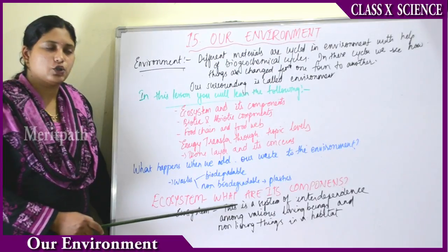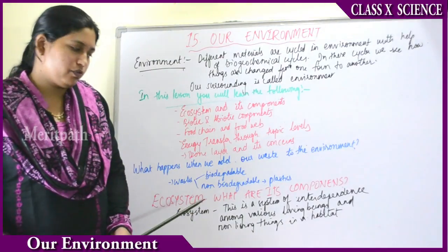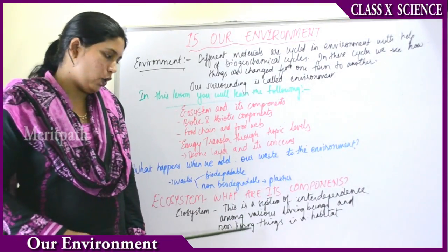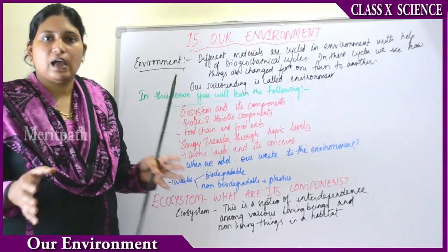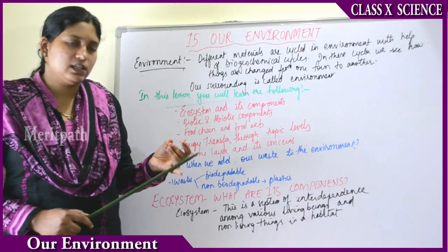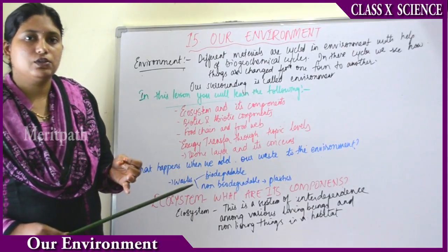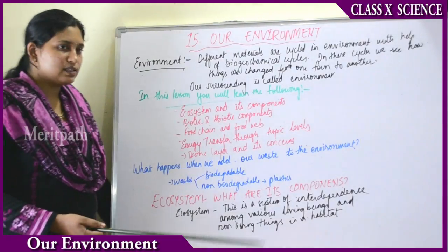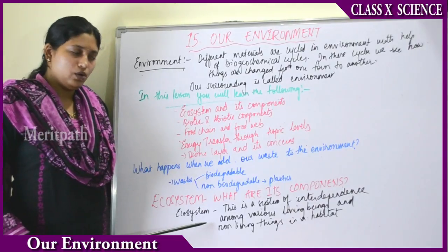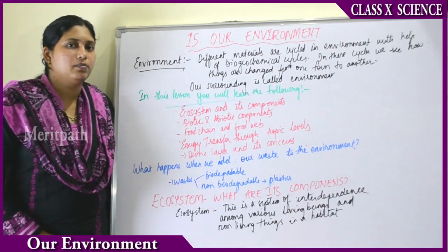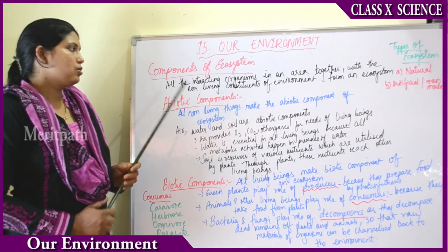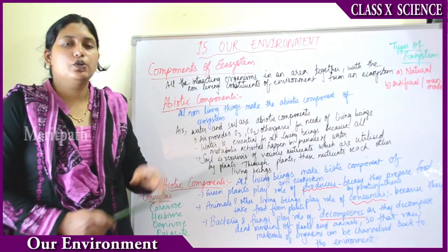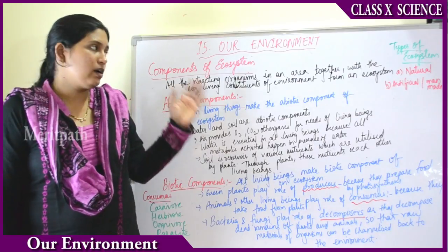Next: ecosystem and its components. What is an ecosystem? The ecosystem is the system of interdependence among living beings and non-living things in a habitat. In a habitat, living things and non-living things exist together and interact with each other — how they interact is known as the ecosystem. All the interacting organisms in an area together with their non-living constituents form an ecosystem.